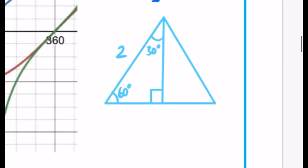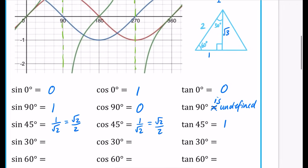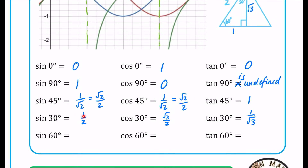To do the 30 and 60 degree values, take an equilateral triangle — all angles 60 degrees — and split it to create a 30-degree angle. If the side length is 2, the bottom half is 1, and using Pythagoras the height is root 3. For 30 degrees: sine 30 is opposite over hypotenuse, which is one half. Cos 30 is root 3 over 2. Tan 30 is 1 over root 3. For 60 degrees: sine 60 is root 3 over 2, and cos 60 is one half.